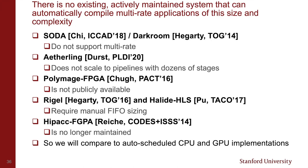There is no existing actively maintained system that can automatically compile multi-rate applications of this size and complexity. SODA and Darkroom were not designed for multi-rate; Aetherlink doesn't scale to pipelines with dozens of stages; Polymage FPGA is not publicly available and the source code no longer exists; Rigel and Halide HLS require manual FIFO sizing; and HIPAC FPGA is no longer maintained. So instead, we compare to auto-scheduled CPU and GPU implementations in Halide — CPU using the Halide master branch auto-scheduler, and GPU using a GPU auto-scheduler published last year.